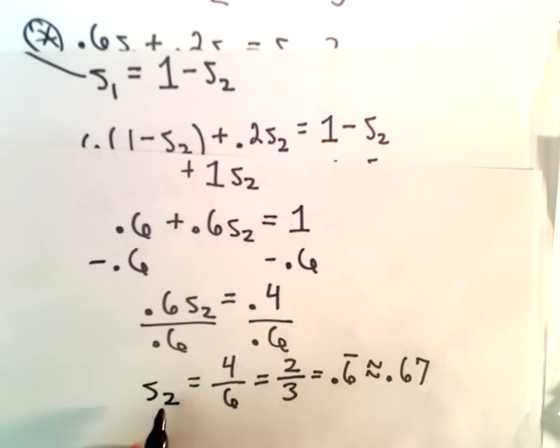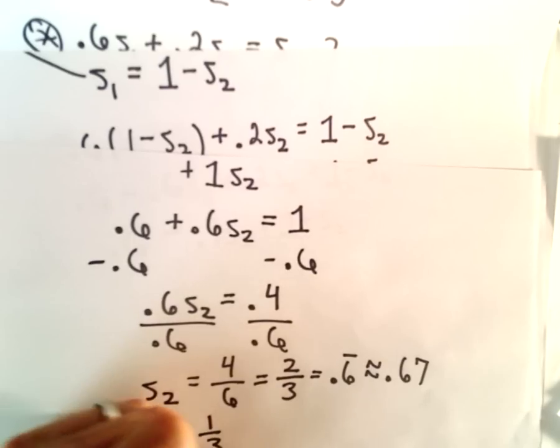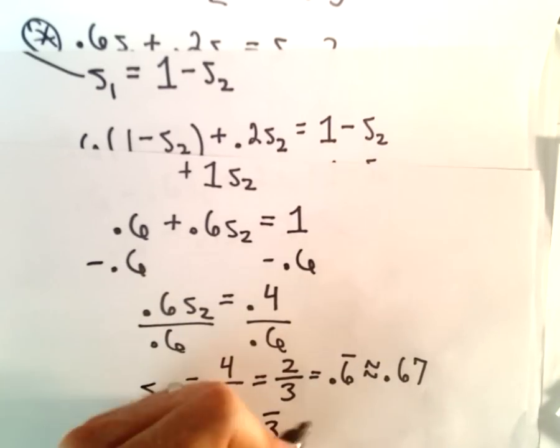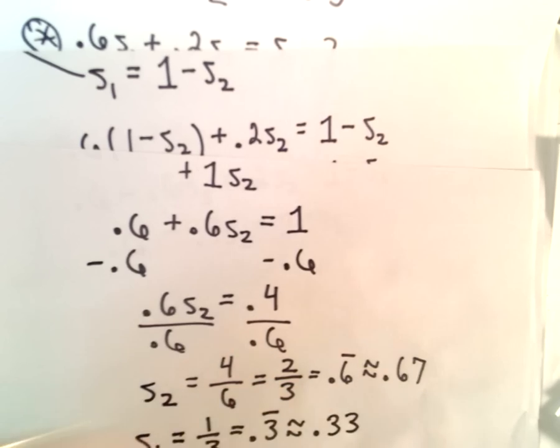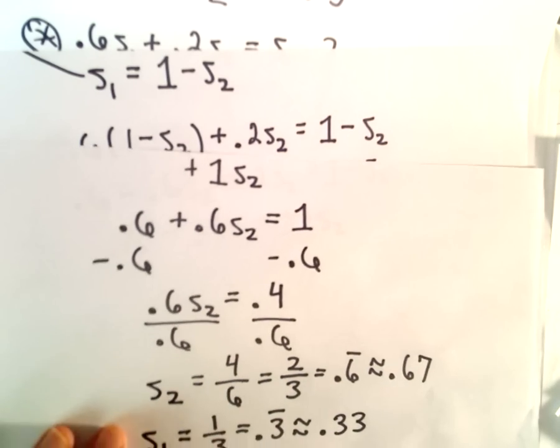Well, we know that since S₁ plus S₂ add up to 1, that would tell us that S₁ equals 1/3, or 0.3 repeating, or we could round that to roughly 0.33.